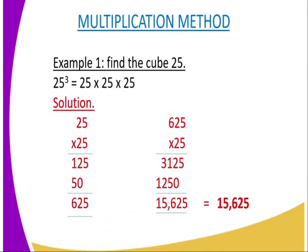And to the multiplication method, example 1, you are required to calculate the cube of 25. What are you supposed to do? You are supposed to multiply 25 by itself three times, meaning that 25³ becomes 25 times 25 times 25. And the first solution, you are supposed to multiply 25 by 25, and you will end up getting 625.